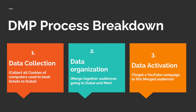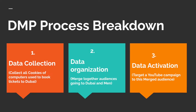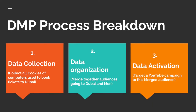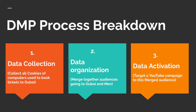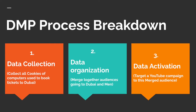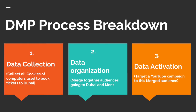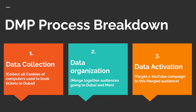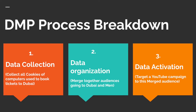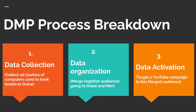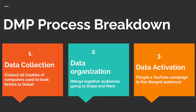Now it's important to understand what a DMP does with this data. There are three functions. First, it collects the data. Second, it helps to organize data — for example, we can club together people interested in buying Audi and people interested in buying Mercedes. Third, it helps to activate the data, meaning if you have certain data in your DMP you can create a campaign targeting only these audiences, which is called data activation. So a DMP helps to collect, organize, and activate the data.